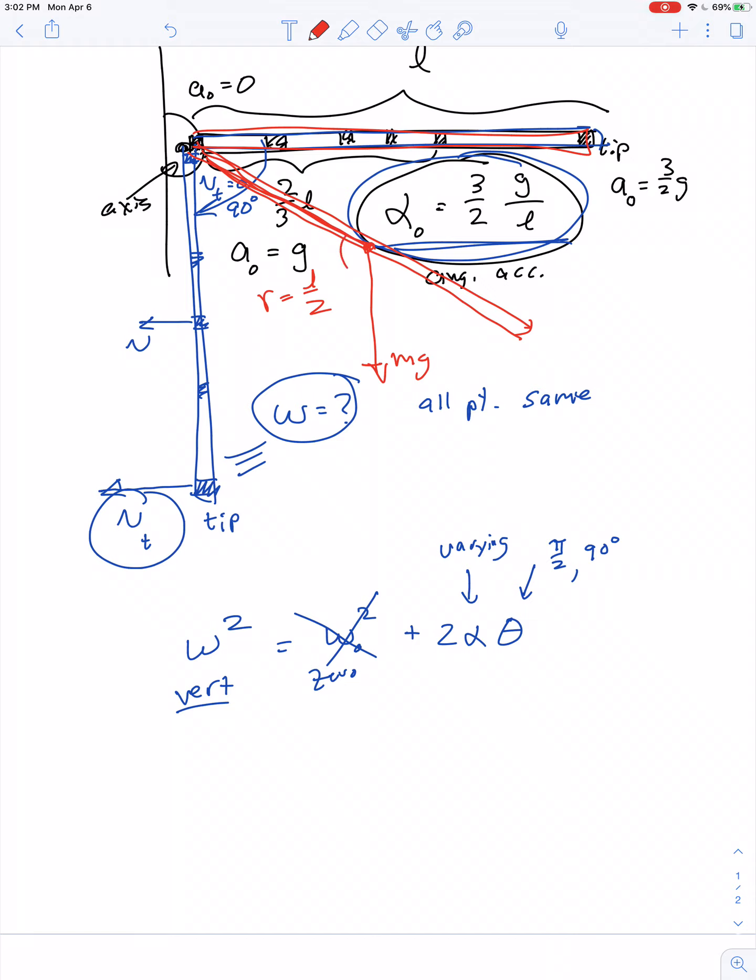However, the angle between the lever arm and the force doesn't stay 90 degrees as it was in the beginning. In fact, the angle goes to 0 once the beam has reached vertical. If torque is equal to the amount of force times the length of the lever arm times sine of theta, theta is always changing.